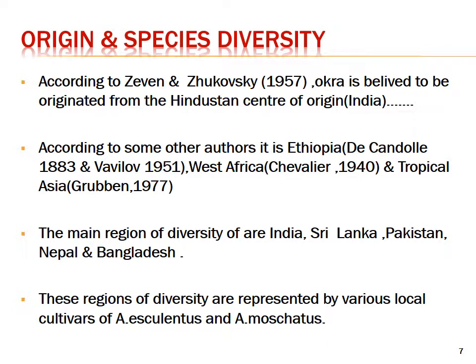Origin and species diversity: Okra is believed to have originated from Hindustan — the center of origin is India. According to some other authors it originated in Ethiopia, according to Dicondia, and according to Chevalier it originated in West Africa and Tropical Asia. The main regions of diversity of India are Sri Lanka, Pakistan, Nepal, and Bangladesh.